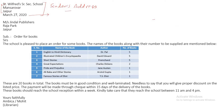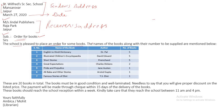After the sender's address and date, write the receiver's address, leaving a space between them. Then leave a space and write the subject, which you can extract directly from the question. The subject here is: order for books. Begin the letter: 'The school is pleased to place an order for some books with Jindal Publishers. The name of the books along with their numbers to be supplied are mentioned below.'